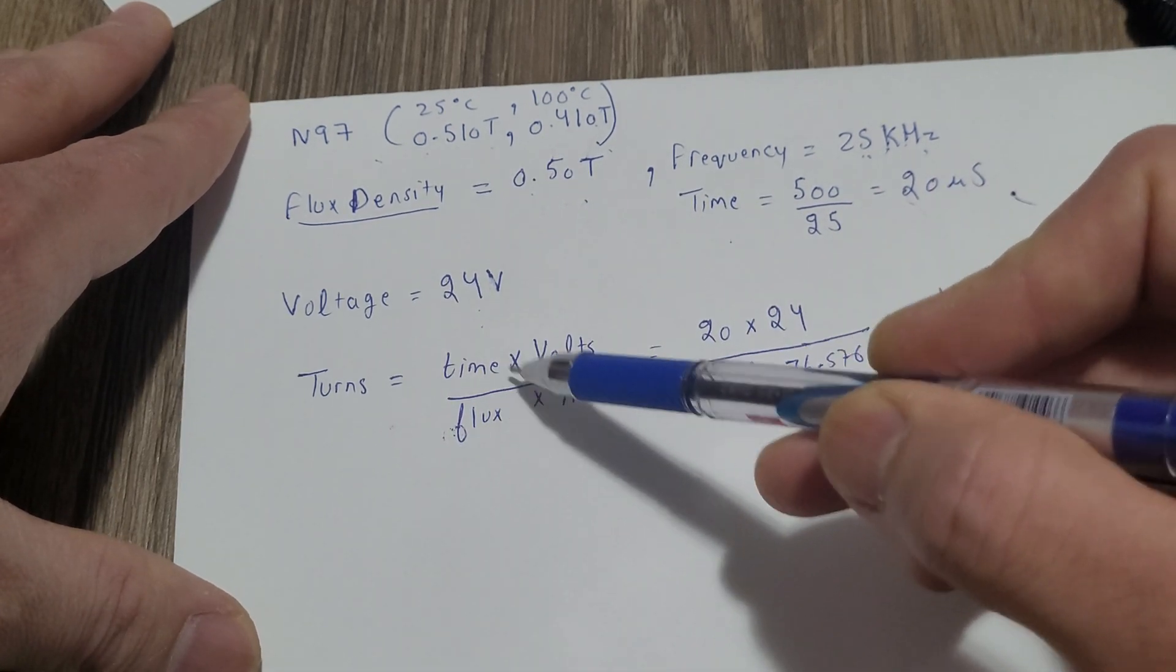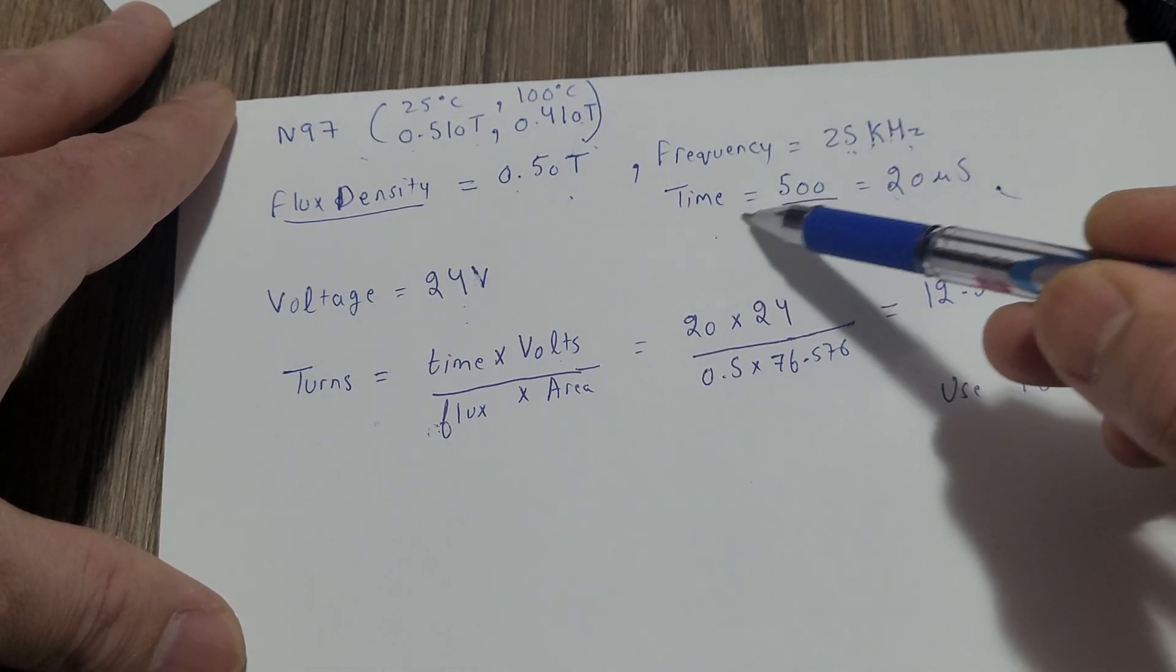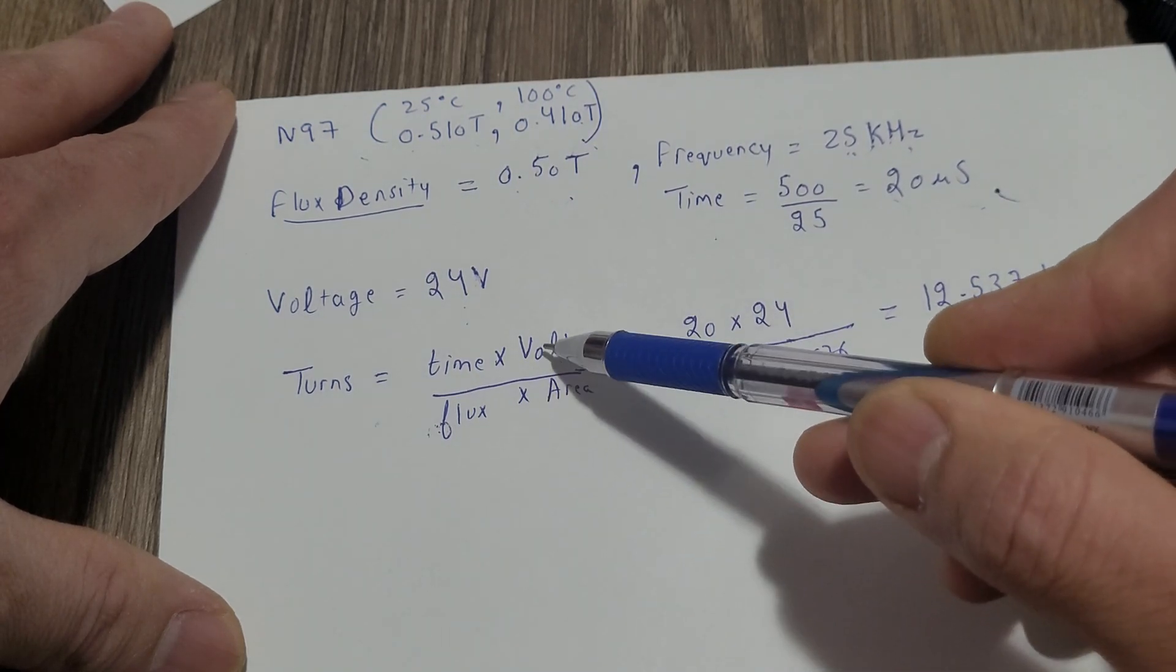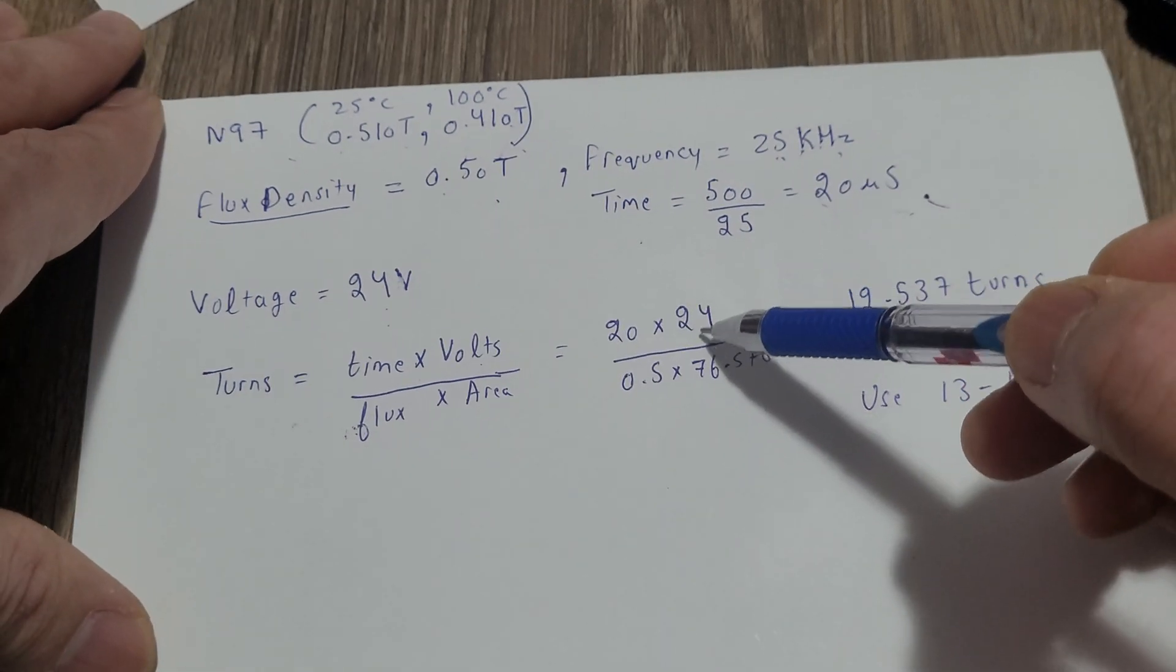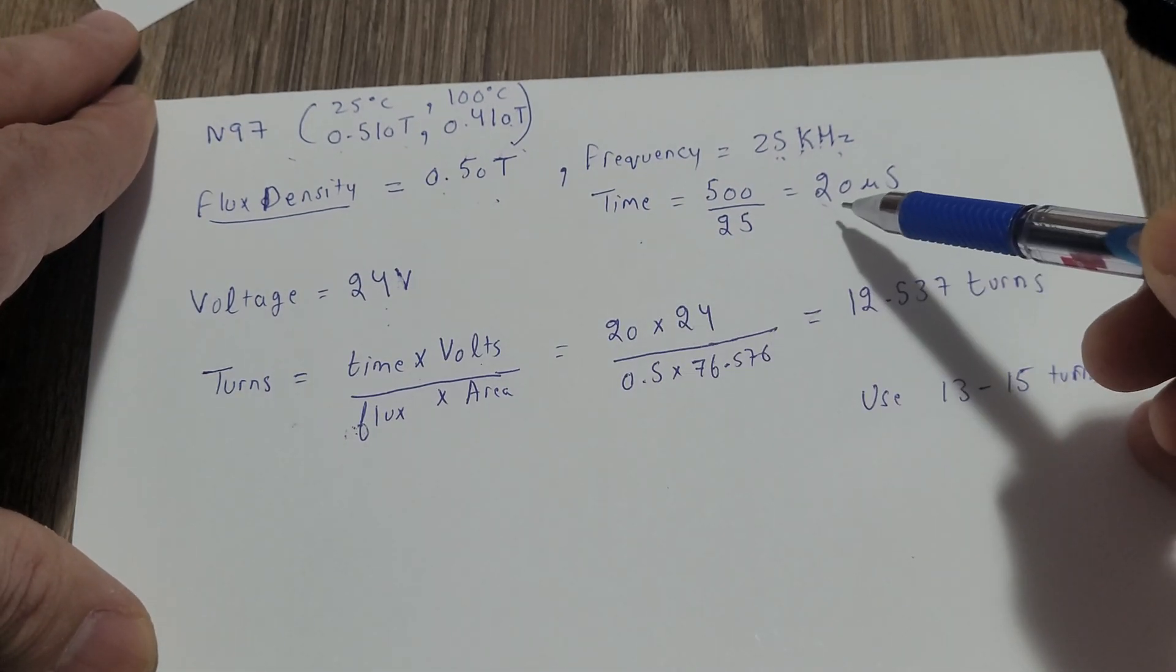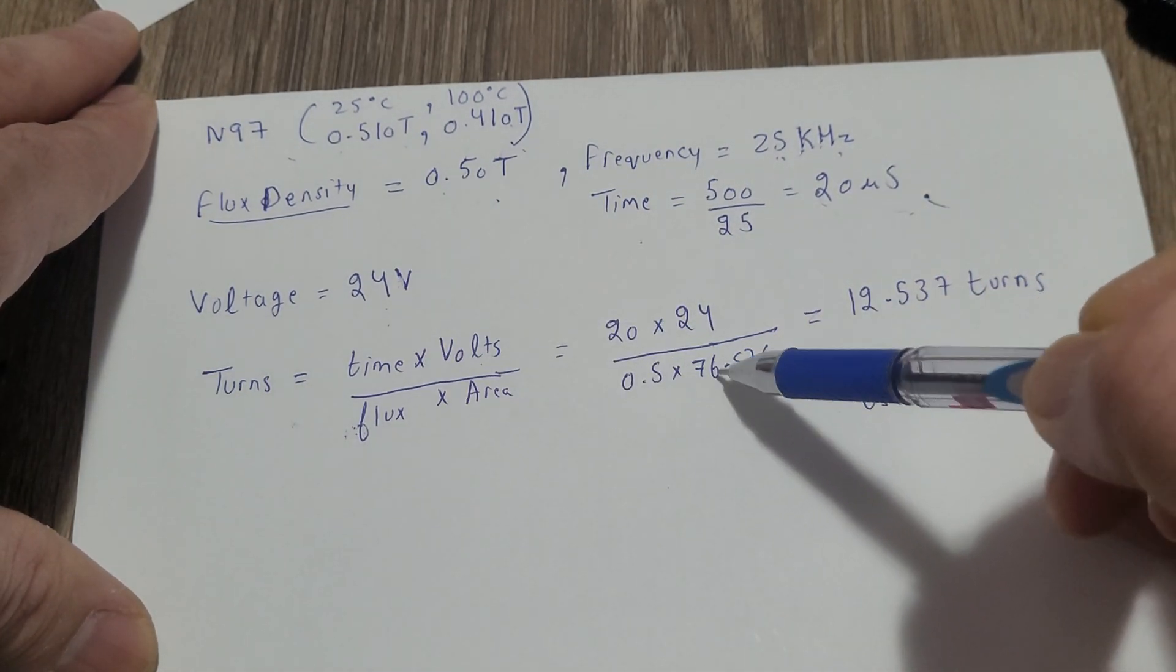So time into volts: time 20 microseconds into volts divided by flux into area. So 20 into 24 divided by 0.5 flux density into area 76.576.